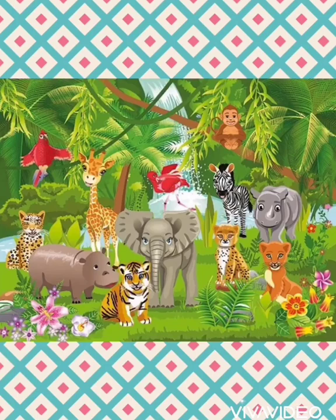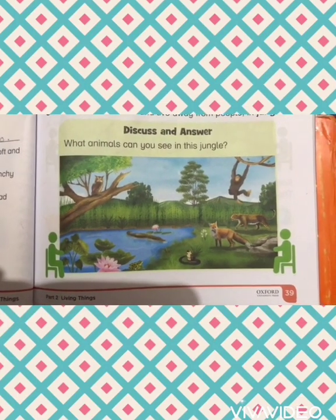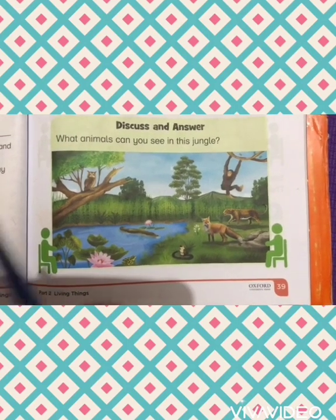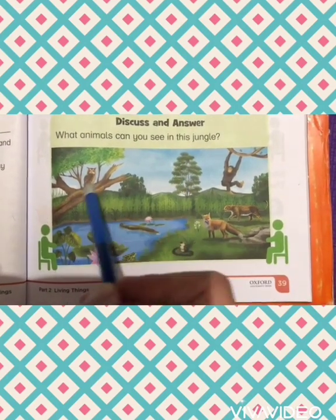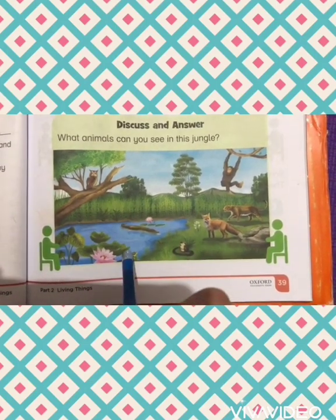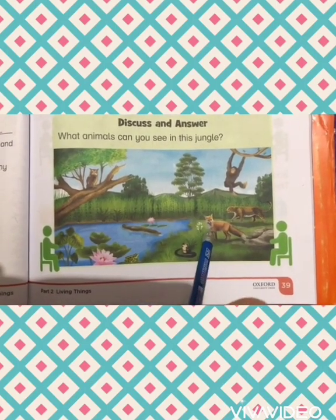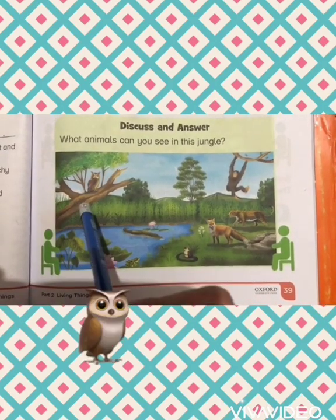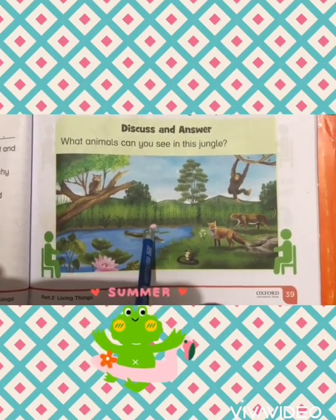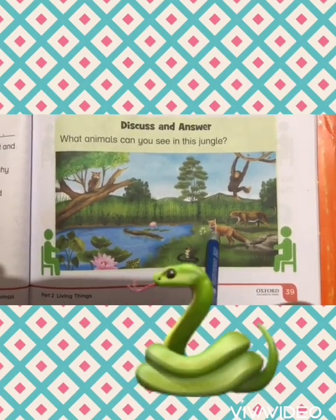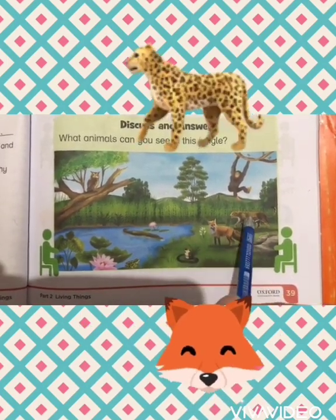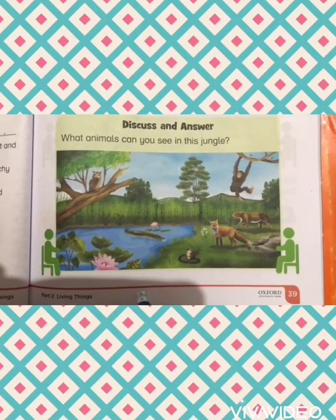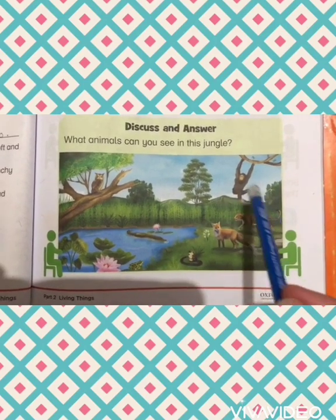This is a picture of a jungle, and all the animals in this picture are wild. Let's discuss and answer: what animals can you see in this jungle? Let's count — one, two, three, four, five, six, seven. Now let's name them: owl, frog, crocodile, snake, fox, cheetah, monkey. All these animals are wild, and that is why they live in the jungle.